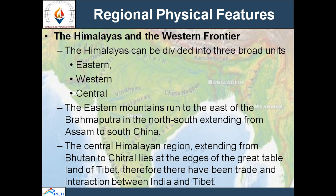The Himalayas can be divided into three broad units: the eastern Himalayas, the western Himalayas, and the central Himalayas. The eastern Himalayas run from east of the Brahmaputra river, extending from Assam to south China. The central Himalayan region extends from Bhutan to Chitral, at the edges of the great tableland of Tibet, enabling trade and interaction between India and Tibet. Great routes connected the Indian plains with Iran and Central Asia through Afghanistan via the Gomal, Bolan, and Khyber passes.